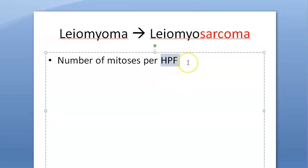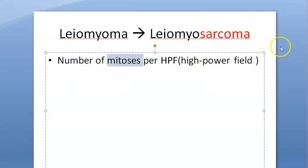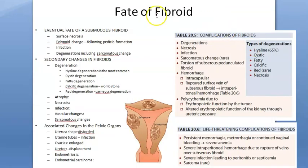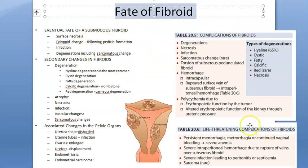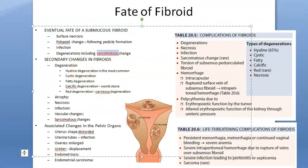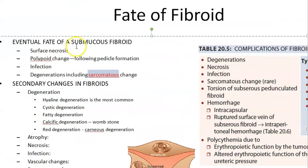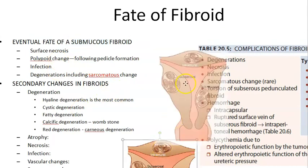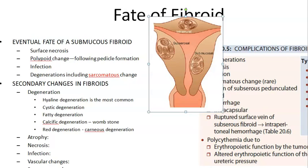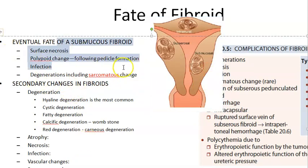Our topic today is the fate of fibroid. One fate is sarcomatous change into leiomyosarcoma. What happens to the submucous fibroid? The submucous fibroid is just below the endometrium. It can become pedunculated — this is called a polypoid change, forming a pedicle. The surface can undergo necrosis, there can be infection, and there can be sarcomatous change into leiomyosarcoma. This is the fate of submucous fibroid.